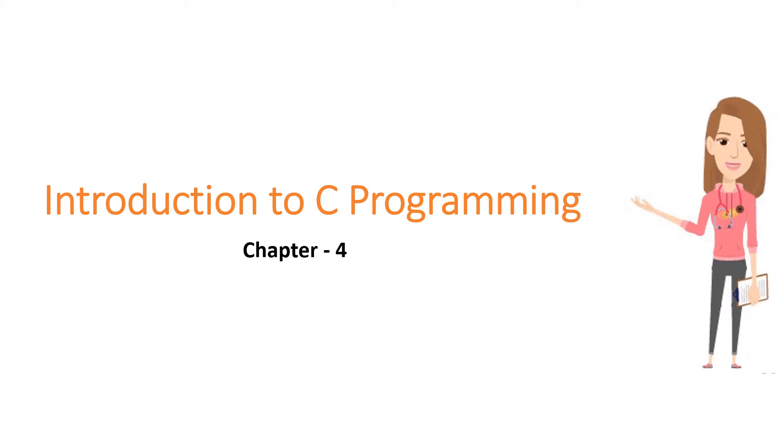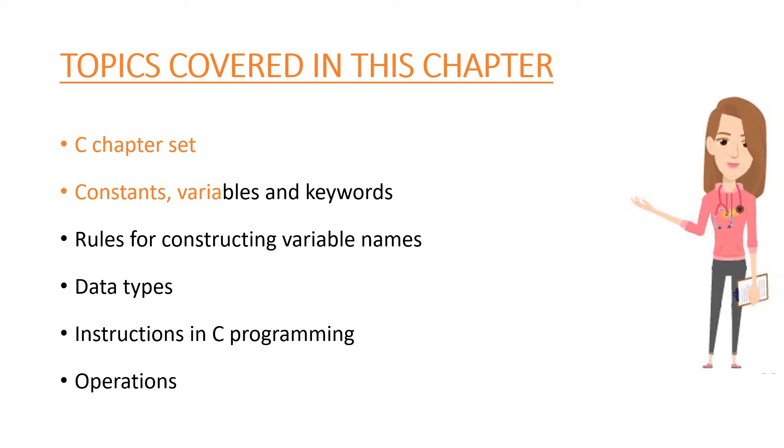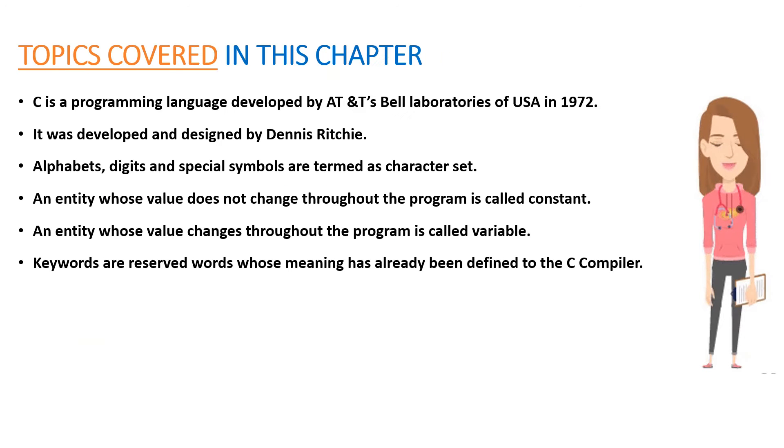Introduction to C Programming, Chapter 4. Topics Covered in this Chapter: C Character Set, Constants, Variables and Keywords, Rules for Constructing Variable Names, Data Types, Instructions in C Programming, and Operations.